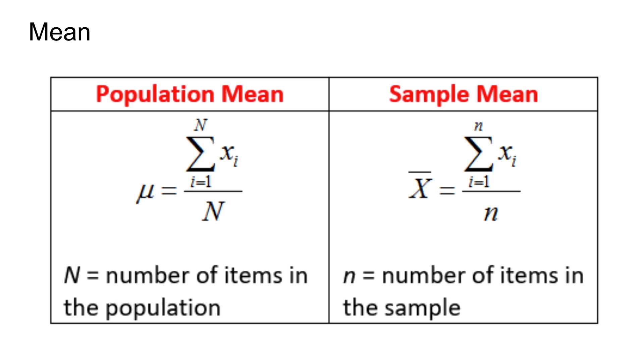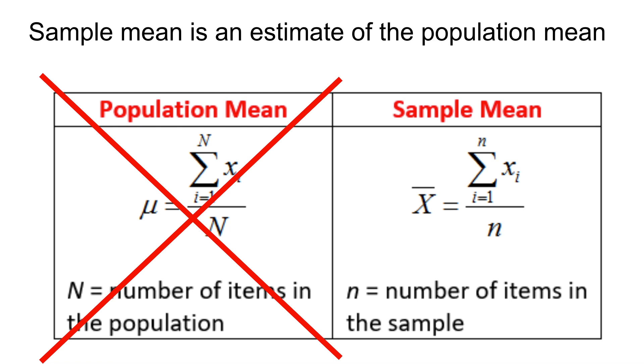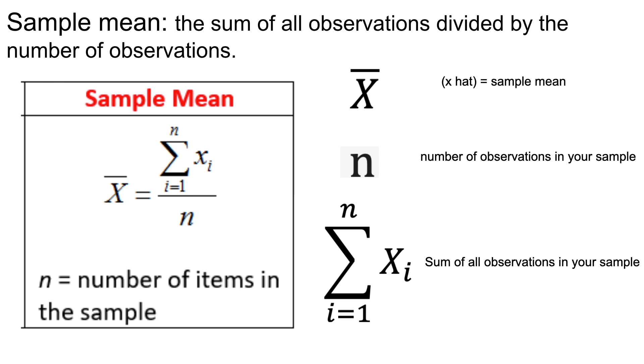So of course we are talking about sample means in this case. Thinking back to what we know about the structure of data, rarely can we actually get all of the potential values for our entire population of interest. Therefore today we're going to be talking specifically about sample means. And for the purposes of what we're going to be doing, sample mean is indeed an estimate of the population mean. This is just an accepted thing within statistics.